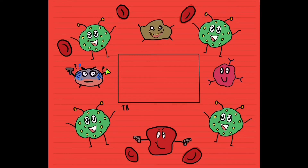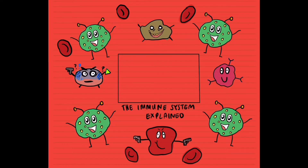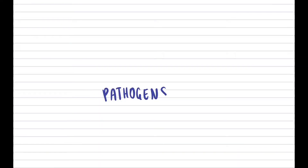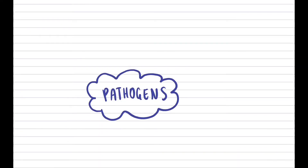The human immune system is a defense mechanism that protects your body from pathogens and has kept you alive to watch this very explanation of it. Pathogens are foreign bodies that have the ability to cause disease.